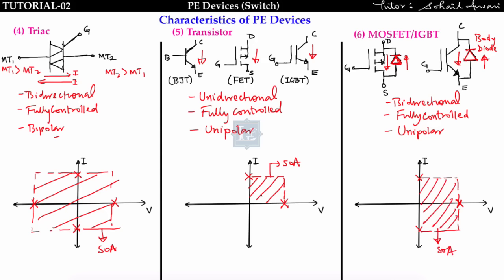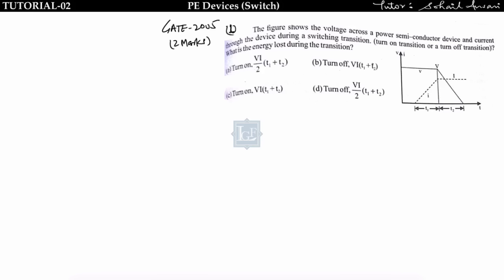These are the switch characteristics commonly tested in GATE exams. Let's solve some previous year GATE problems. First problem (GATE 2005, 2 marks): a voltage and current waveform of a switch is given. We must determine whether the switch is turning on or off and find total energy lost during the transition. At t=t1, current increases with positive slope and voltage decreases — this indicates turn-on.